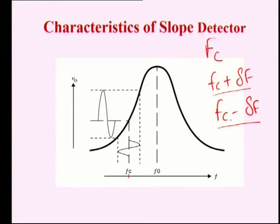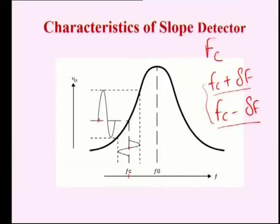Between the positive and negative peaks the carrier shifts within this range. We have to reconvert this to detect the amplitude variation. When the incoming signal is at frequency Fc, the amplitude should be 0. If we consider that amplitude variation done at the transmission side, we are doing the reverse process here. This point corresponds to Fc plus ΔF. When Fc plus ΔF is transmitted during the positive peak of the message signal, if the incoming signal is Fc plus ΔF, it should be converted into a positive peak amplitude.